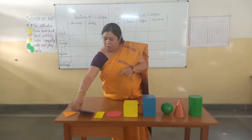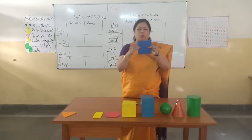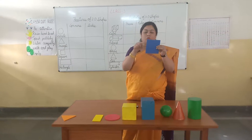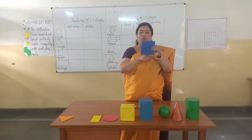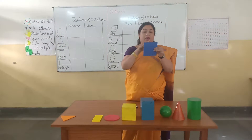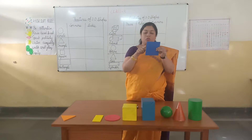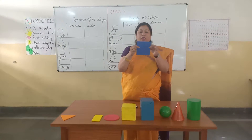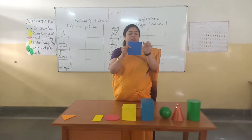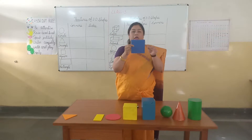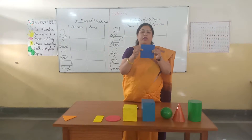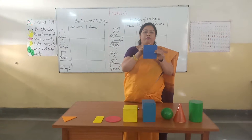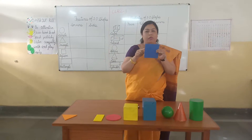The next shape is a square, and the square has 1, 2, 3, 4 corners and 1, 2, 3, 4 sides. And you can see all the sides are equal in length. So, square has 4 corners and 4 equal sides.